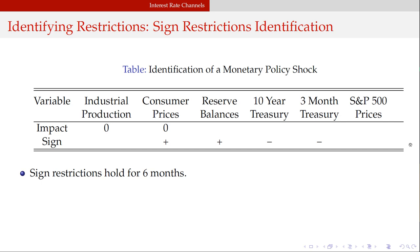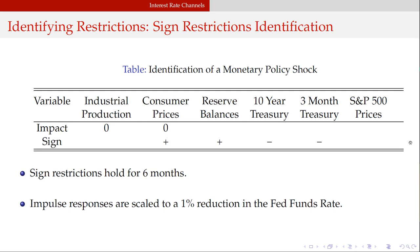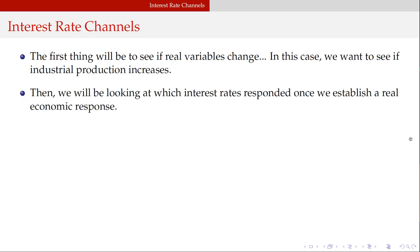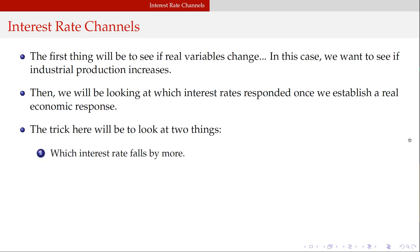I leave S&P 500 completely unrestricted, because it's going to be one of the big indicators of whether a transmission mechanism gets activated. I impose sign restriction identification and let it hold for six months, then scale the impulse responses to be consistent with a one percent reduction in the fed funds rate. First we check if real variables change; if they do, we can investigate how it worked.